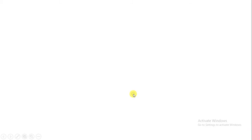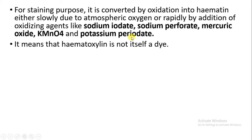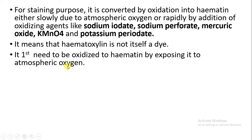In hematoxylin, what happens is that hematoxylin is first oxidized with the help of atmospheric oxygen and then it is converted into hematin. Alternatively, some oxidizing agents can be used, such as sodium iodate, sodium periodate, mercuric oxide, potassium permanganate, and potassium periodate. These oxidizing agents convert hematoxylin into hematin. It is actually hematin which is going to give the color and stain the cellular components.